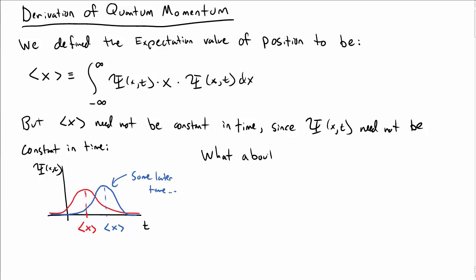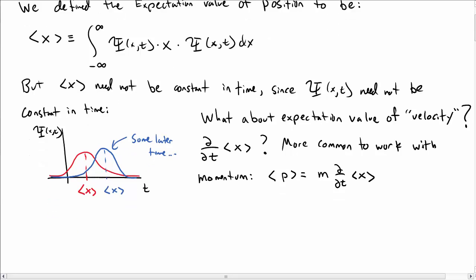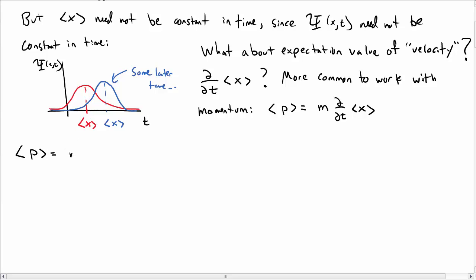So what about the expectation value of velocity? What do we mean by velocity of a quantum particle? Well, we mean the partial derivative with respect to time of the expectation value of position. It turns out it's more common in quantum mechanics to work with momentum, so instead we're going to work with expectation value of momentum, which is mass times the derivative with respect to time of the expectation value of position.